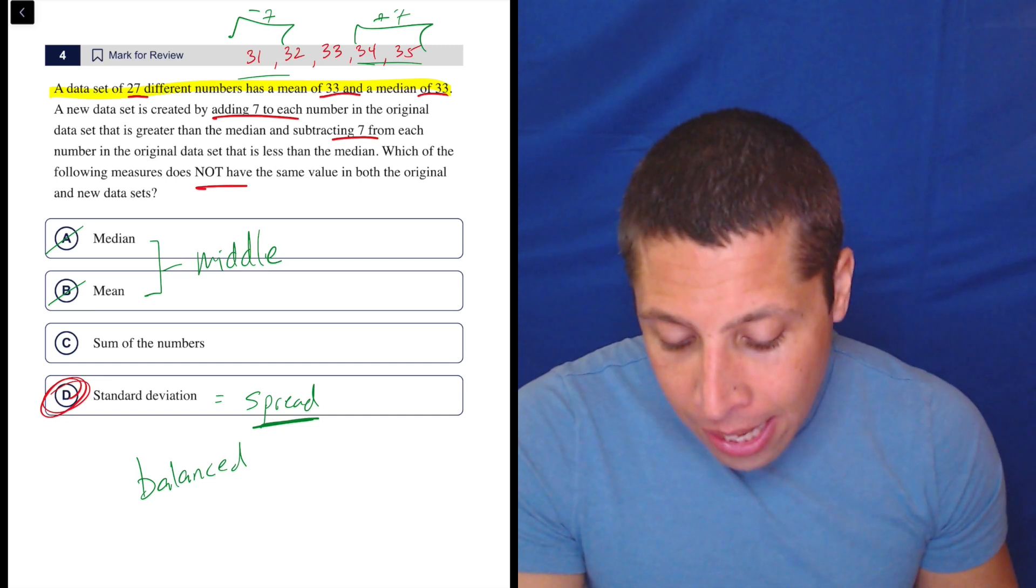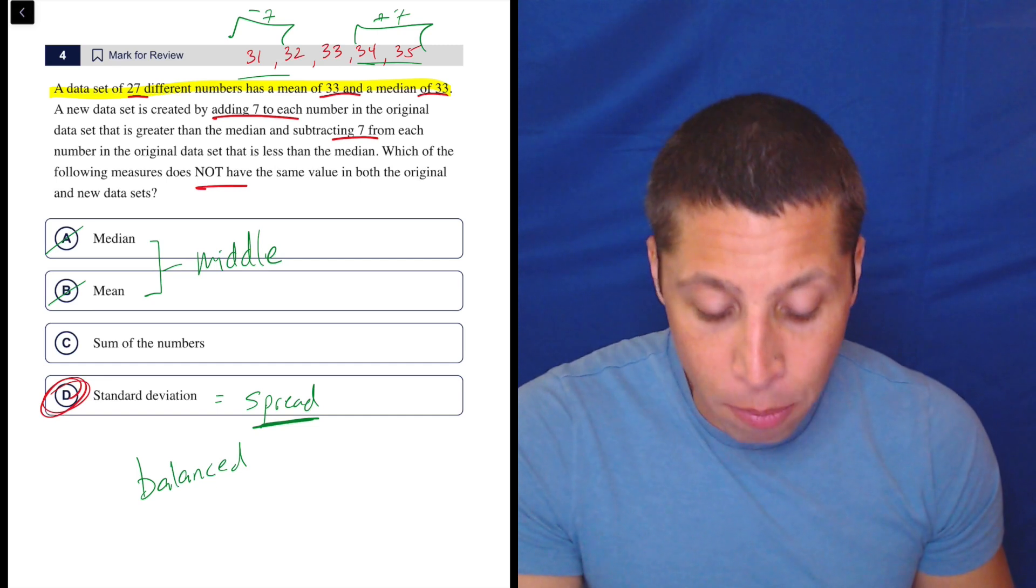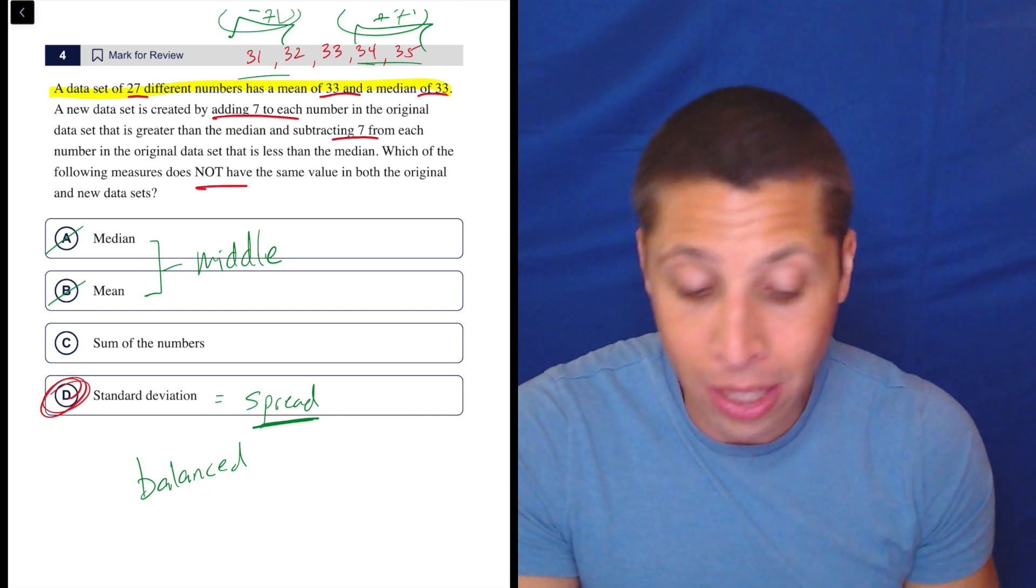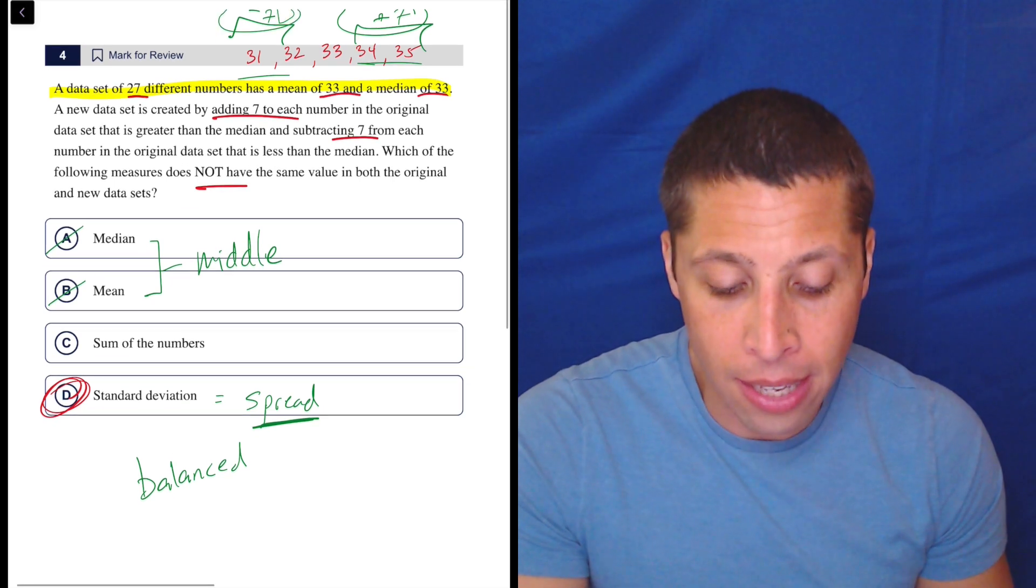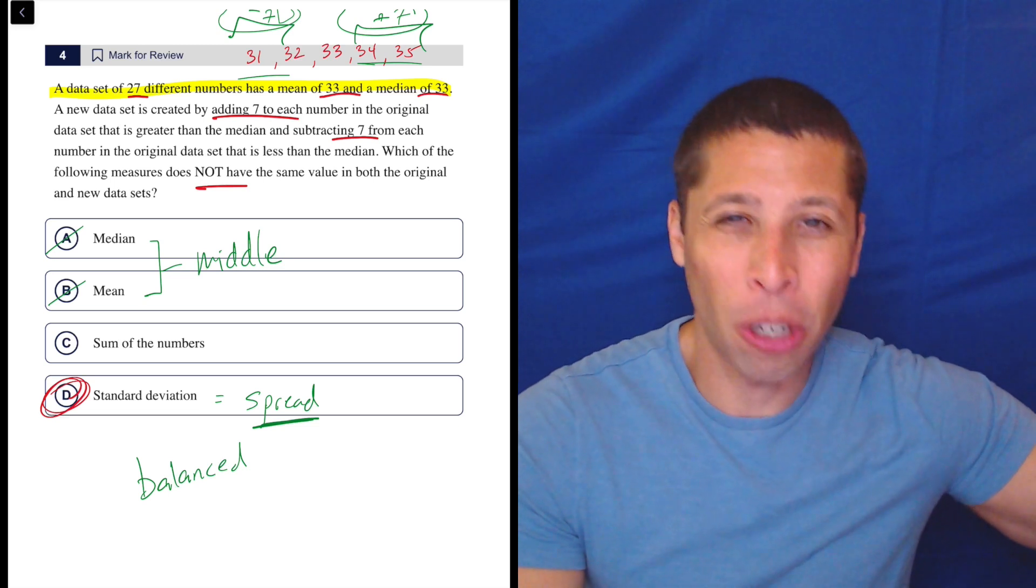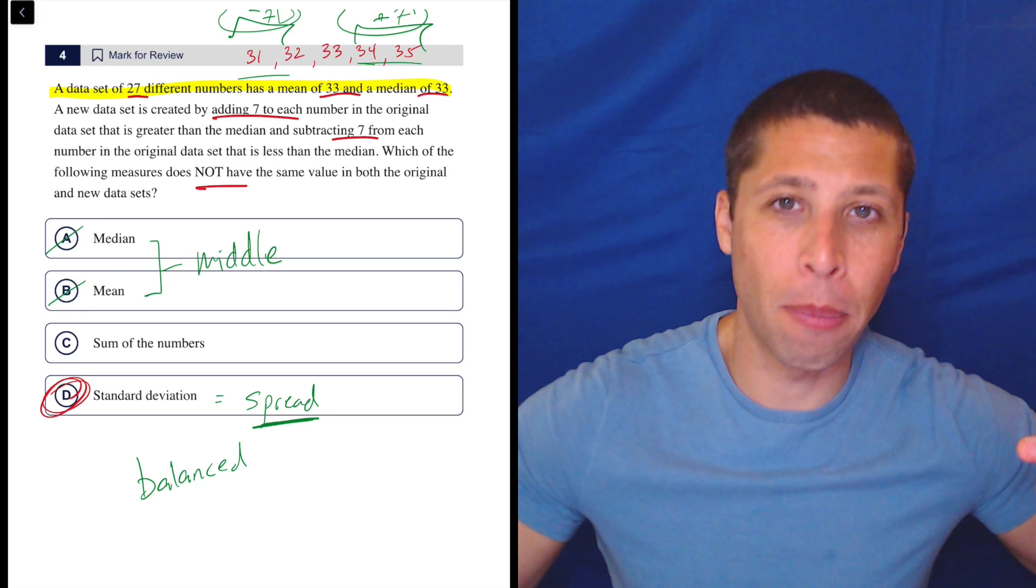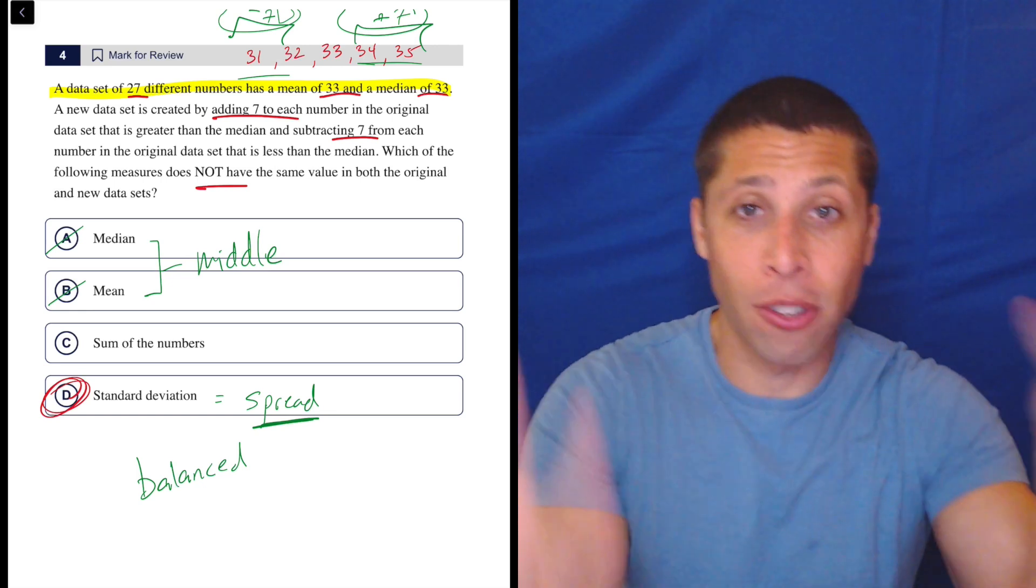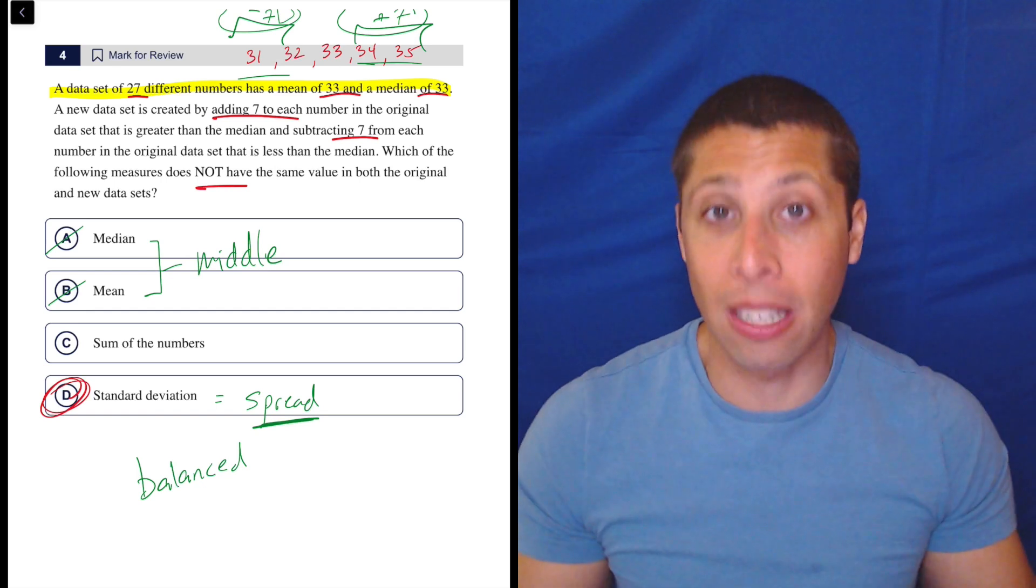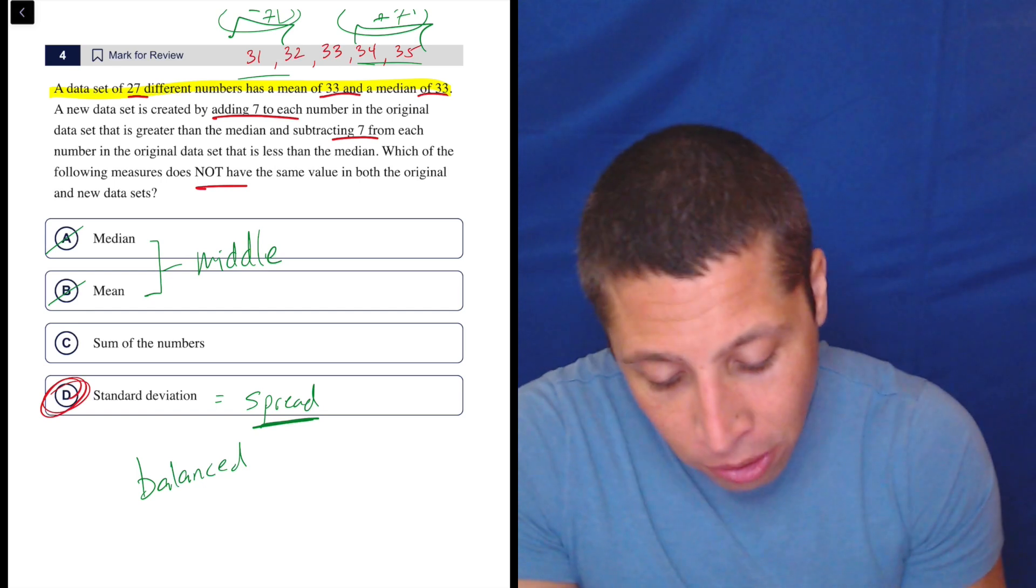Now, the reason C is wrong is more to do with just the fact that if you add seven and subtract seven, you get zero, right? So what's really happening with this set is, yes, every time we add seven to a number that's greater, we're changing the data values. But in terms of a sum, every other number is going to lose seven on the other side. So there's this balancing act. Every time we add seven, there's another number that's losing seven. And so that all evens out. So that's why this is wrong.